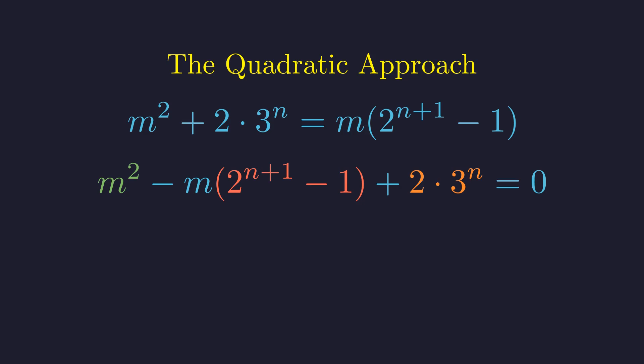Here, the coefficient a is 1, b is the negative of the quantity 2 to the power of n plus 1 minus 1, and c is 2 times 3 to the power of n.